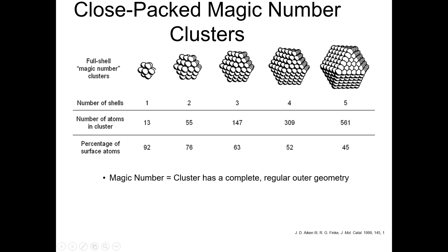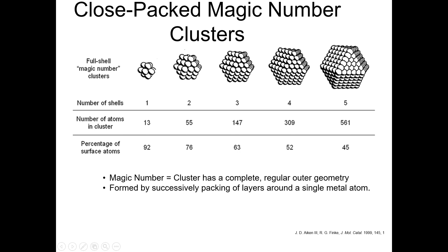To summarize: magic number means a cluster has a complete regular outer geometry. That is the shortest and finest definition of magic number. These clusters shown in the figure illustrate this concept — each has a complete, regular outer geometry.